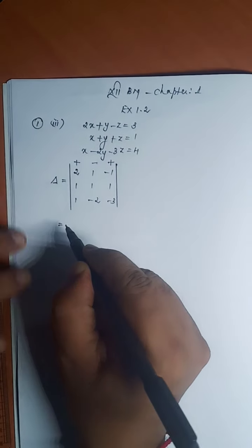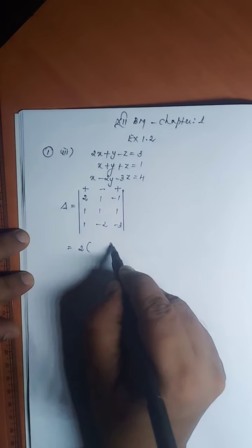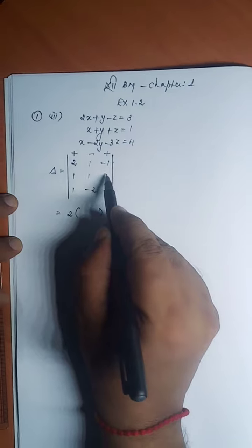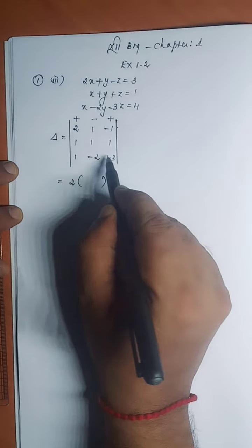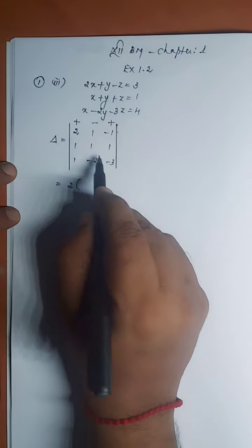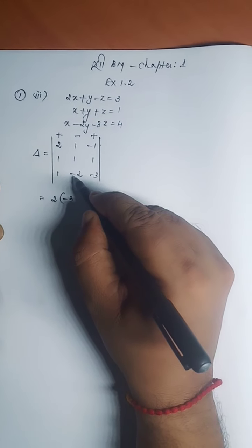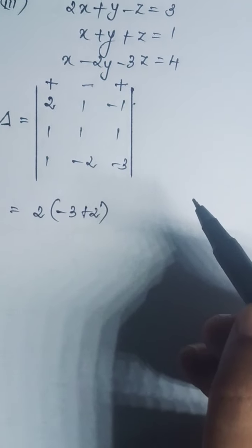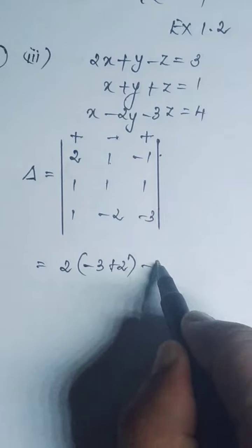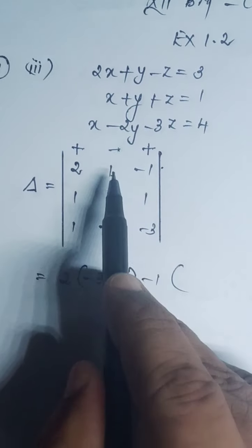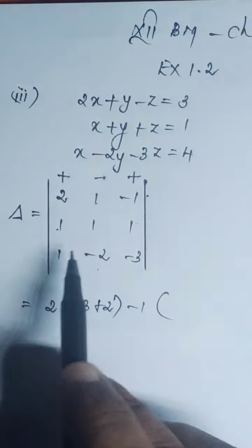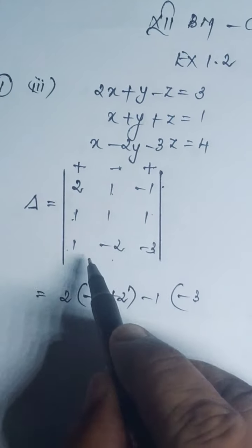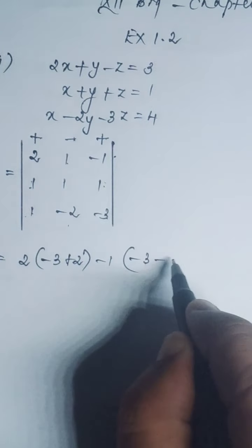That is equal to 2 into — the element's column and row should be eliminated. These four numbers are left out. Multiply the leading diagonal: 1 into minus 3, minus 3. Multiply the non-leading diagonal: minus 2 into 1, minus 2, but becomes plus 2. Then minus into 1, minus 1 — leave this column and row, these four elements are left out. Multiply 1 and minus 3 first. Then 1 into 1, 1 becomes minus 1.